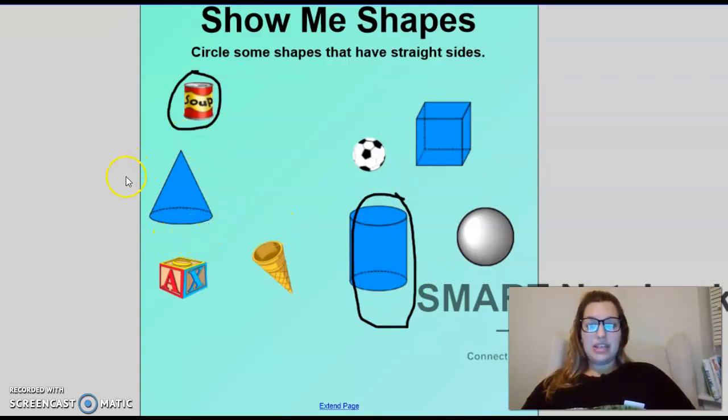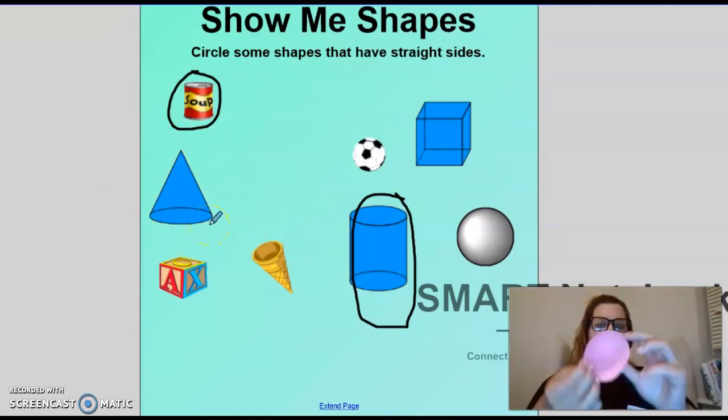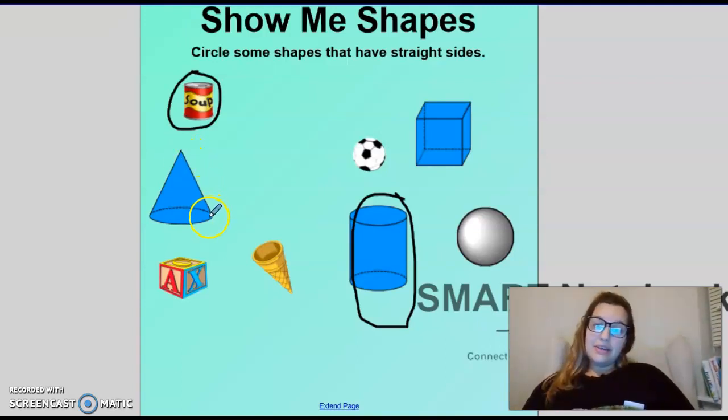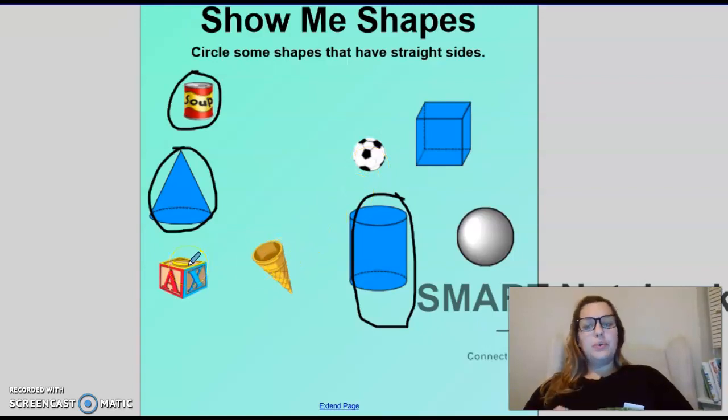Now, let's look at this shape right here. Does it have straight sides? I would agree. Yes, it does have straight sides. Right here are straight sides. I'm going to go ahead and circle it. Can you match it to one of the objects? It's an object out of these three. The soccer ball, the ice cream cone, or the block. Does it match the block? No. Does it match the ice cream cone? Yes. Awesome. Good job.